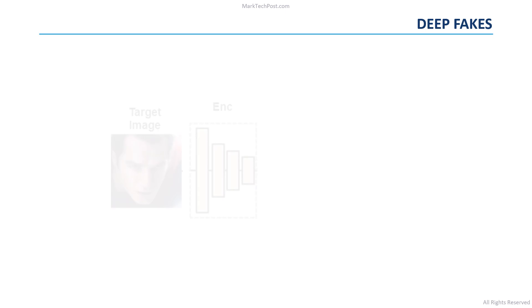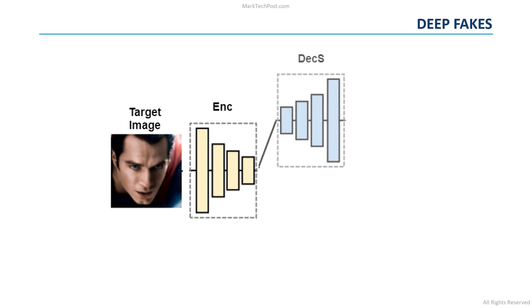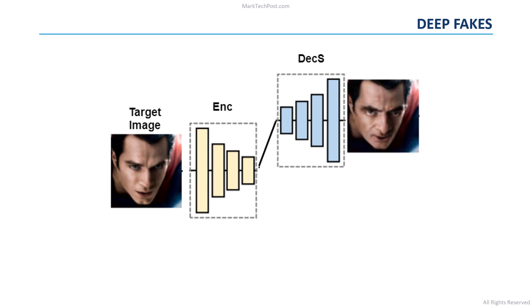During the test stage, a target image is given as input to the encoder enc. Then the decoder deckS will mistake the target image for a source image, producing a result image with the identity of the source image and the attributes of the target image.